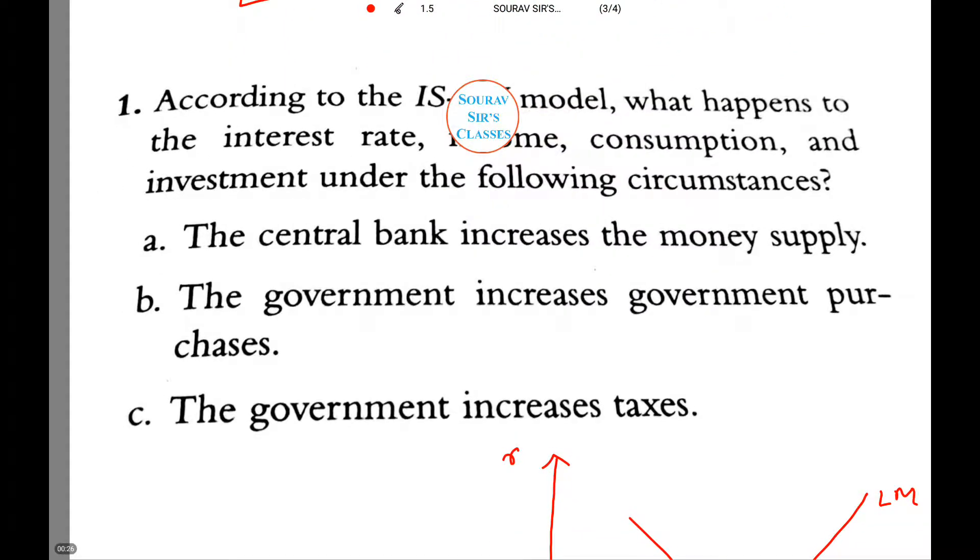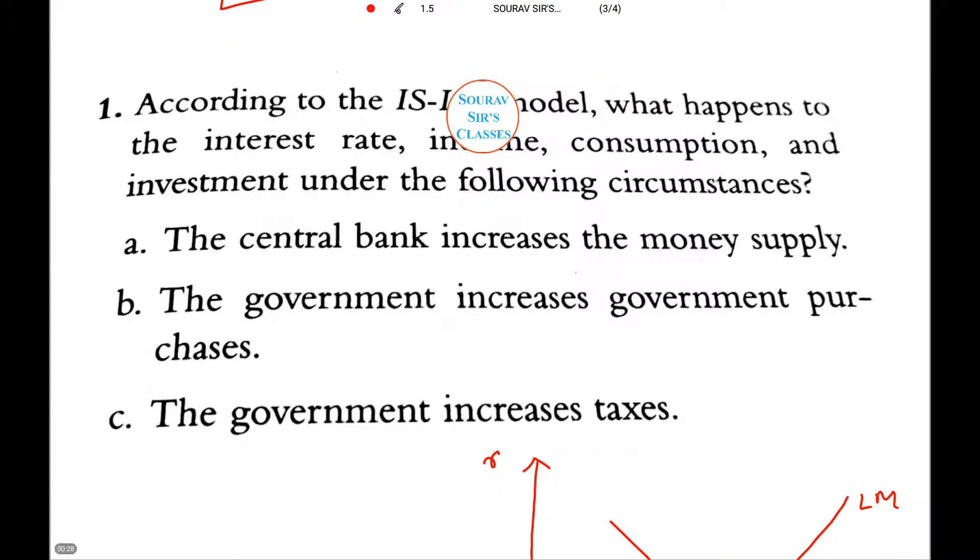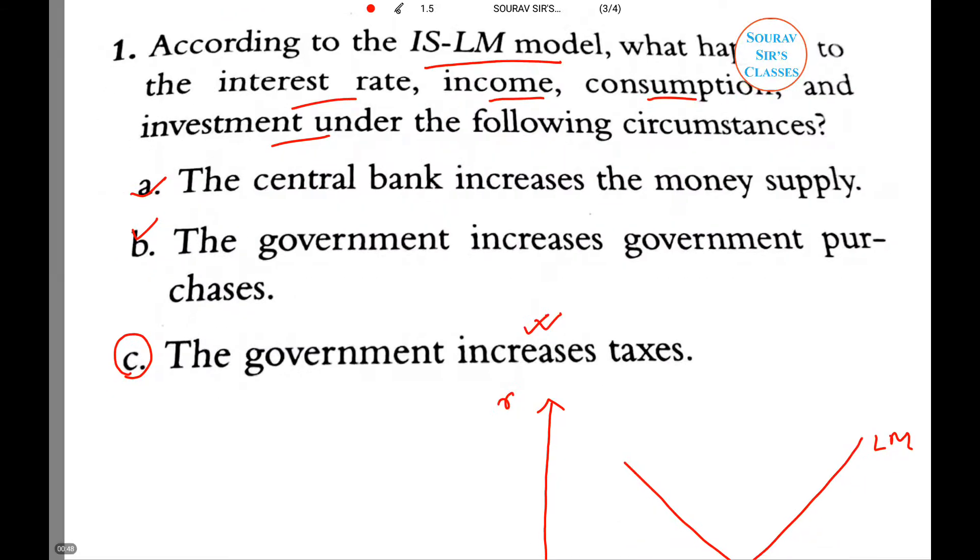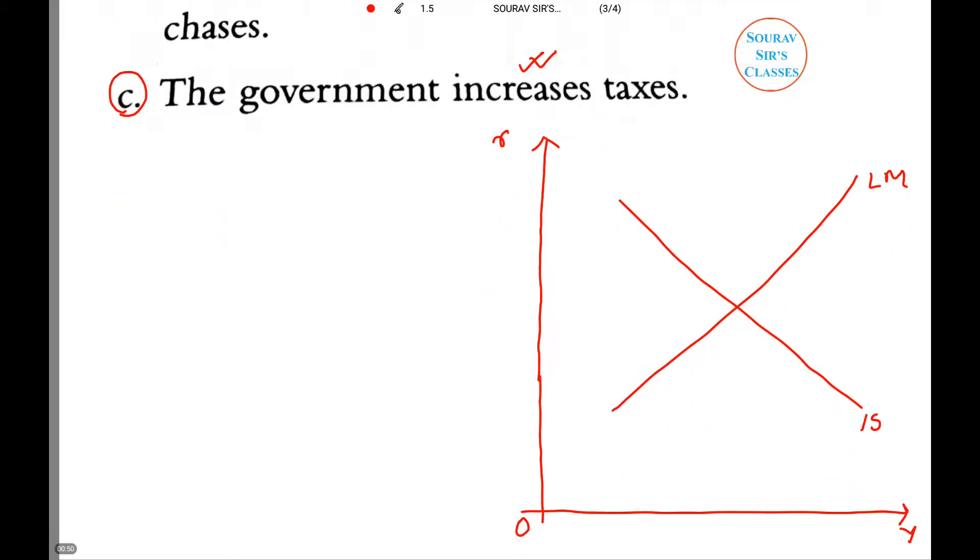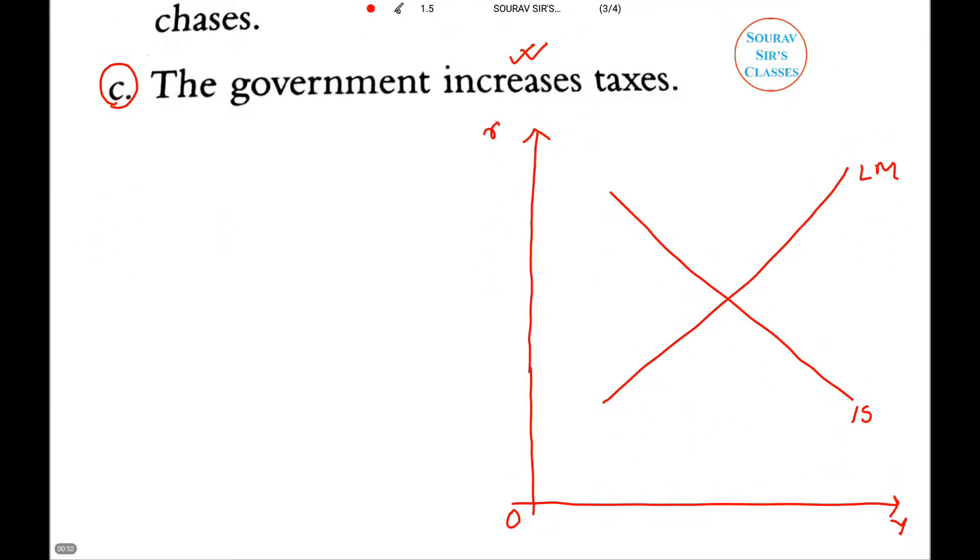Now in our previous tutorial we have already done with part a and b, so today we will be concentrating on part c. Here we need to show that using the IS-LM model setup, we have to comment on interest rate, income, consumption, and investment if government increases taxes.